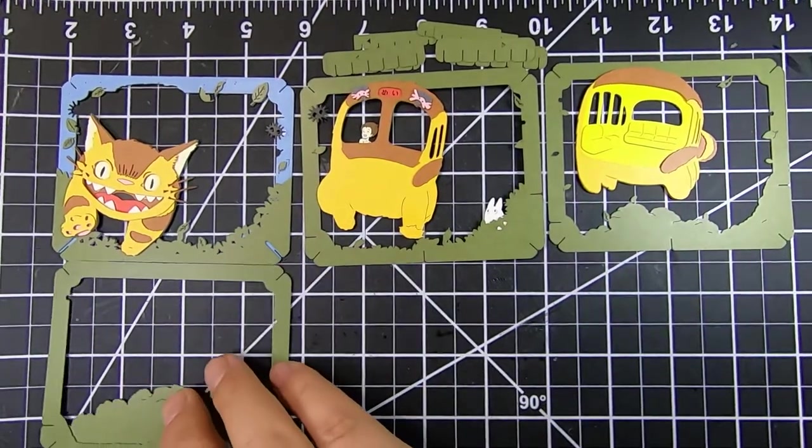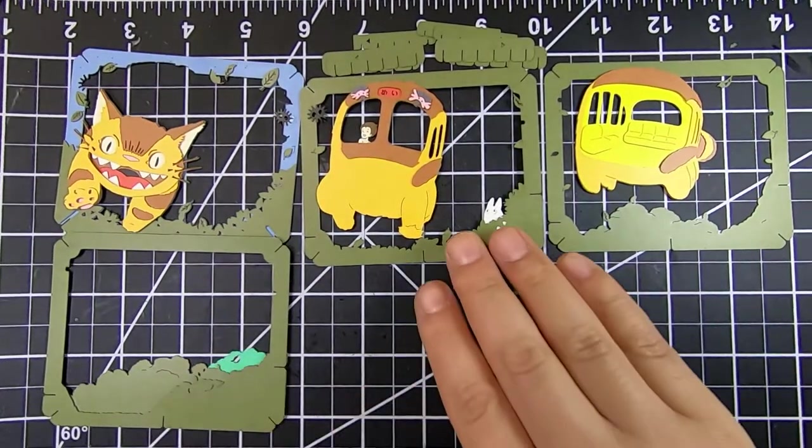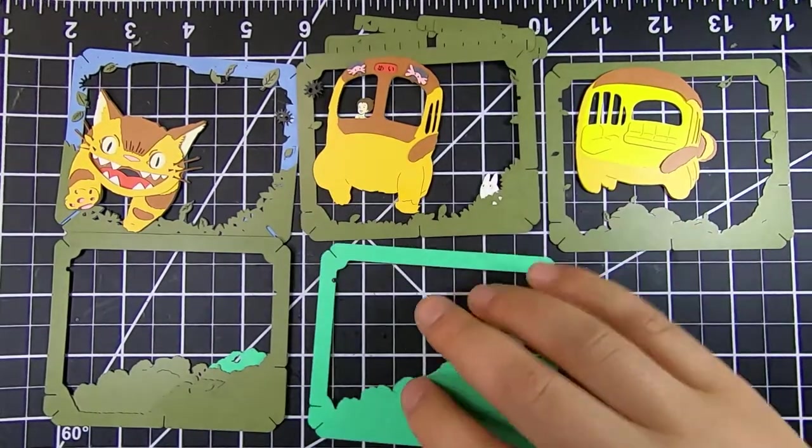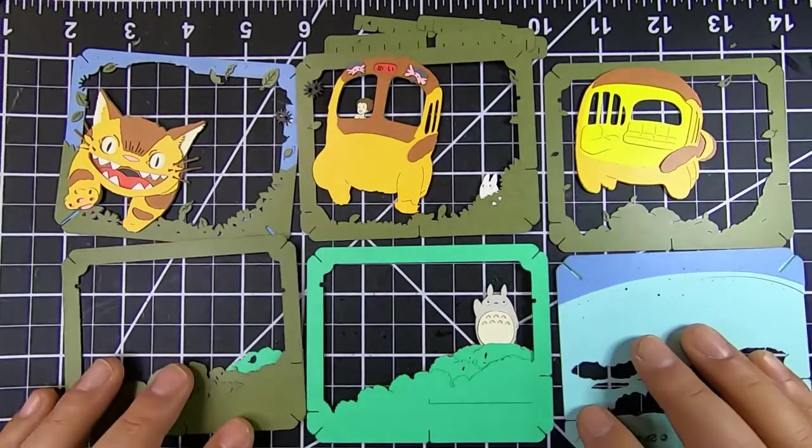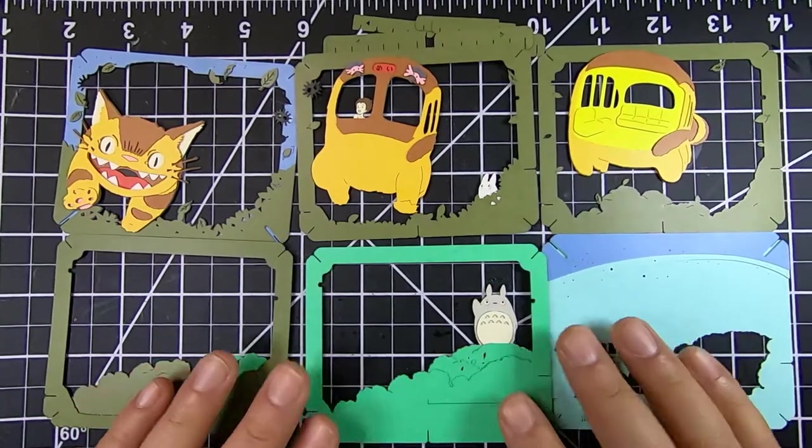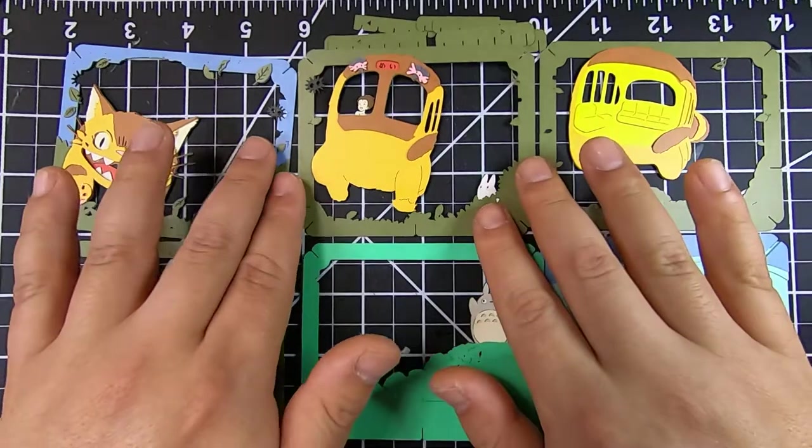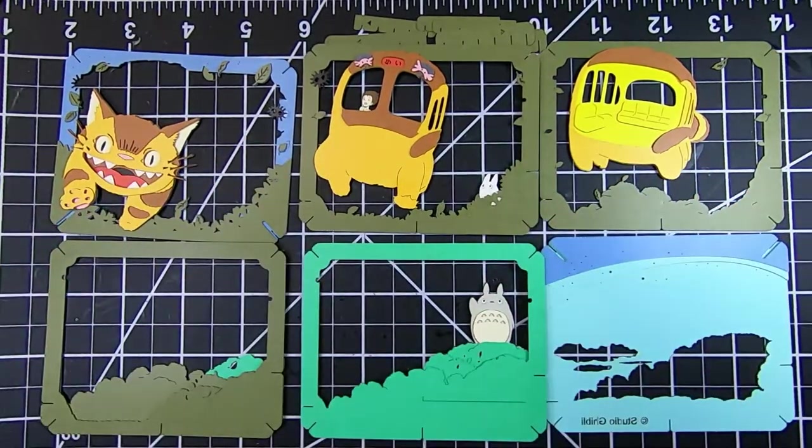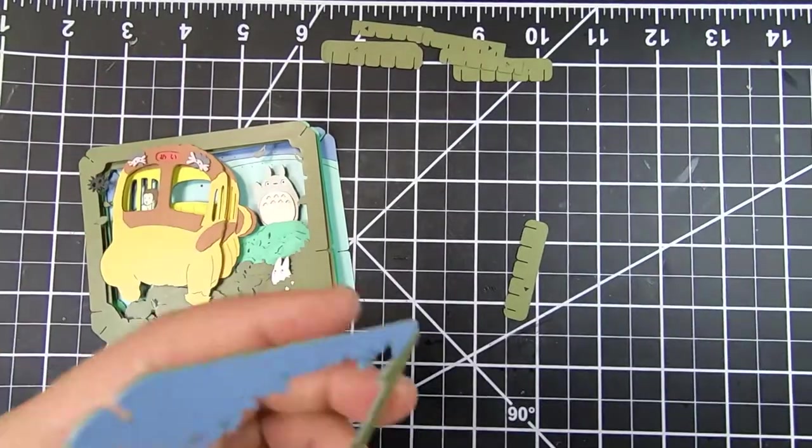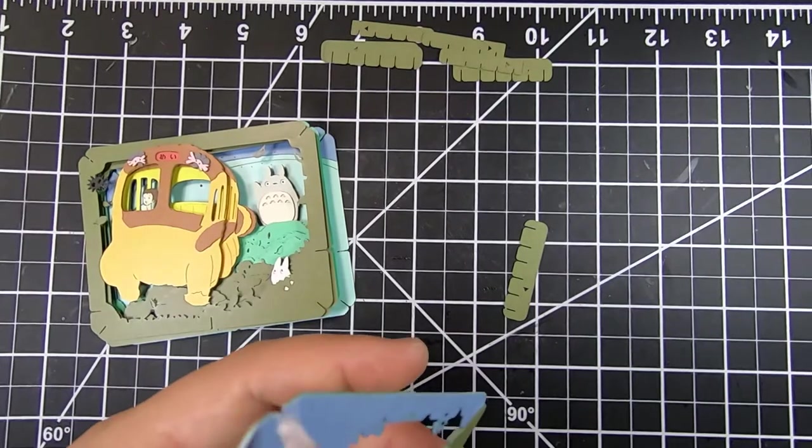So here are all the six layers and as you can see three of the layers are of the cat bus and so there are a lot of details and it takes up half of the build. Then there's Totoro on the fifth layer kind of waving back at you. It's a great build and I love the color schemes on this one.